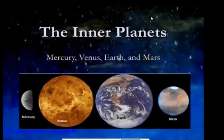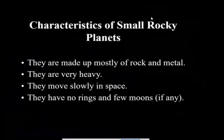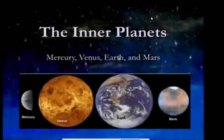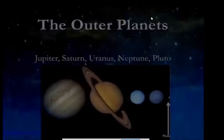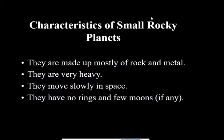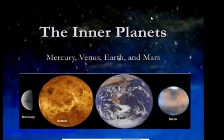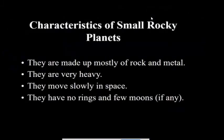Now let's look at the parts of the solar system. We have the inner planets and the outer planets. The inner planets are Mercury, Venus, Earth, and Mars. All of them are made mostly of rock and metal. They are very heavy, they move slowly in space, and they have no rings and few moons.